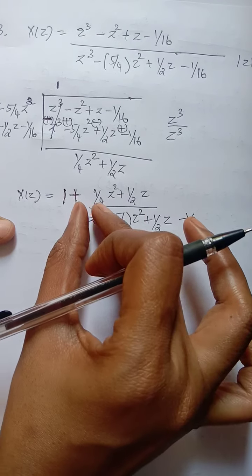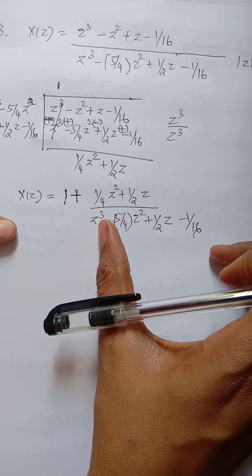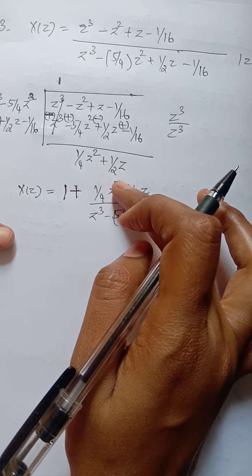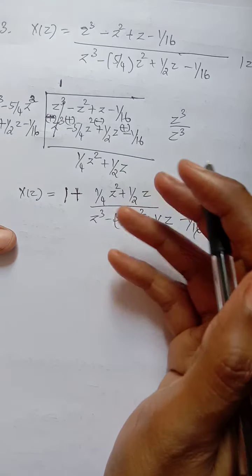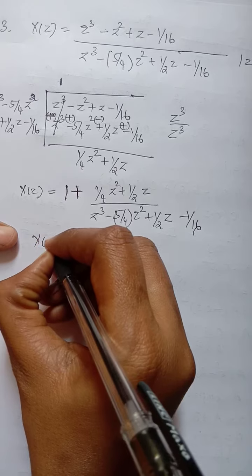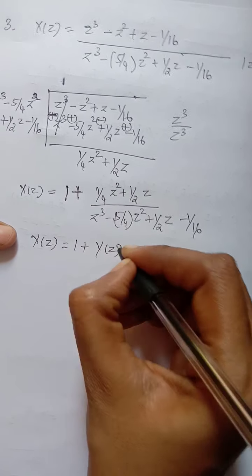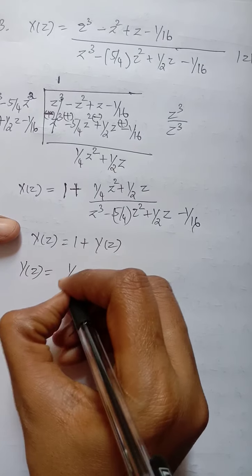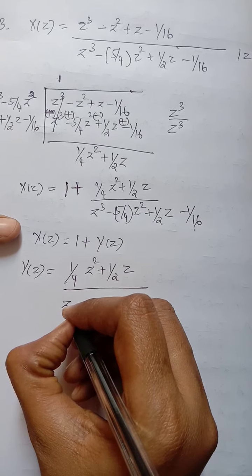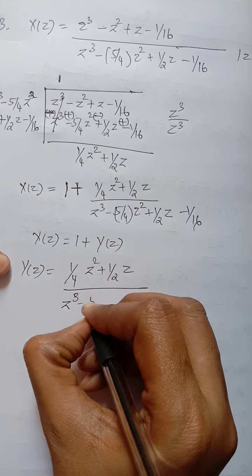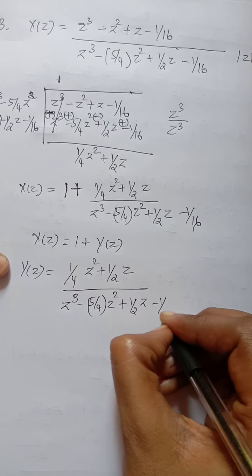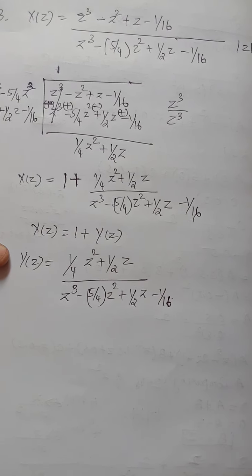We write X(z) = 1 + Y(z), where Y(z) = [(1/4)z² + (1/2)z] / [z³ − (5/4)z² + (1/2)z − 1/16]. Now we can apply partial fractions since the numerator degree is less than the denominator degree.